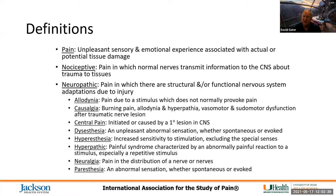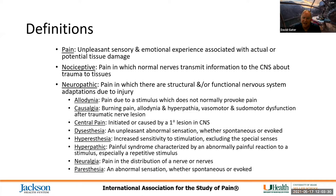Central pain is initiated or caused by a primary lesion within the central nervous system — we typically think about this as a thalamic origin within the brain. Dysesthesias are unpleasant, abnormal sensations, and those can be spontaneous or evoked. Hyperesthesia is increased sensitivity to stimulation, excluding the special senses — so it doesn't include hearing, taste, or vision. Hyperpathic pain is a syndrome characterized by an abnormally painful reaction to a stimulus, especially a repetitive stimulus. Neuralgia is pain in the distribution of a nerve or nerves — dermatomal pain. Paresthesias are abnormal sensations, spontaneous or evoked, typically associated with numbness.